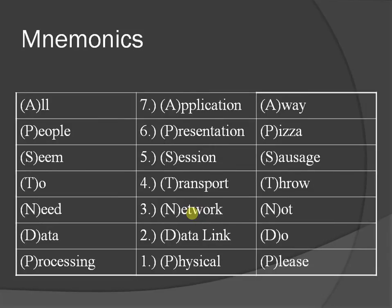We can easily memorize these 7 layers with tricks. One trick is: 'All People Seem To Need Data Processing.' A second trick is: 'Away Visa Sources Through Not Do Please.' You can also create your own method to memorize these 7 layers.